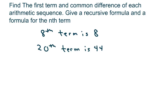We have a list of numbers where the 8th term is 8 and the 20th term is 44. So what we're going to do is write the 8th term: a sub 8 equals a plus n, which is 8.